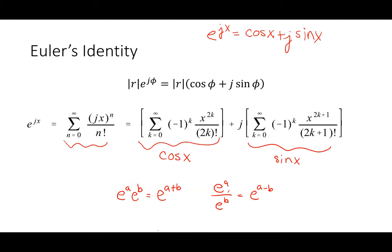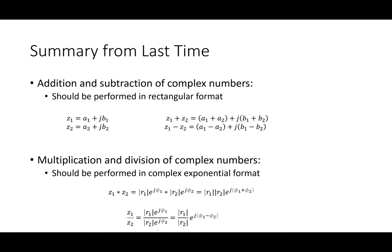Addition and subtraction of complex numbers should be done in rectangular form: add the real parts and add the imaginary parts; subtract the real parts and subtract the imaginary parts. Multiplication and division are done using the complex exponential form, because you can add exponents when multiplying and subtract exponents when dividing.